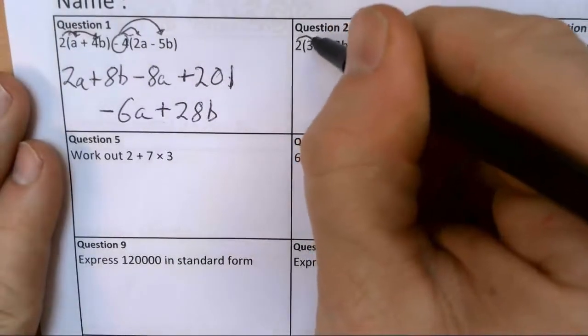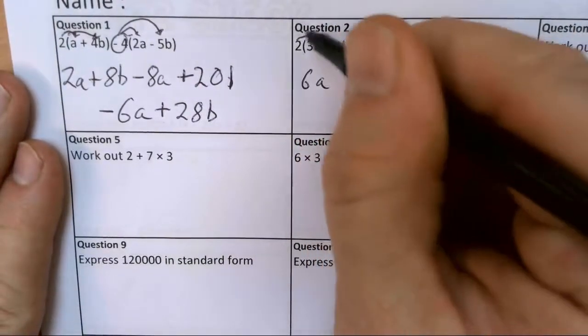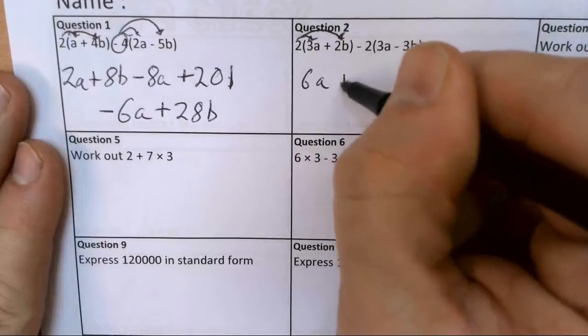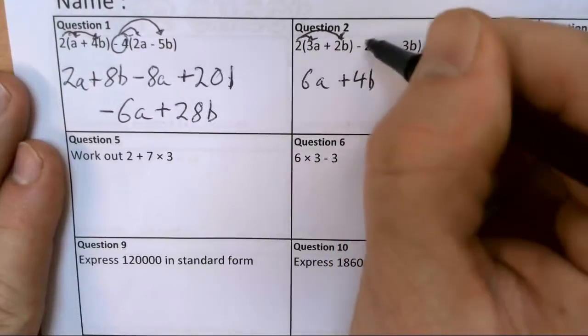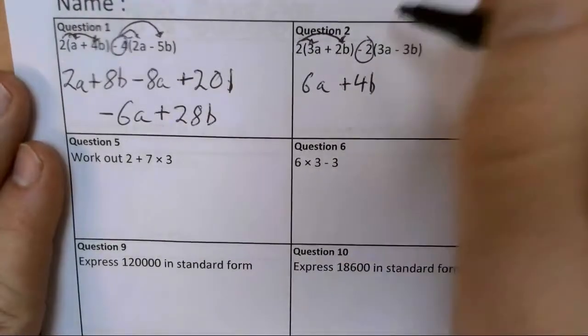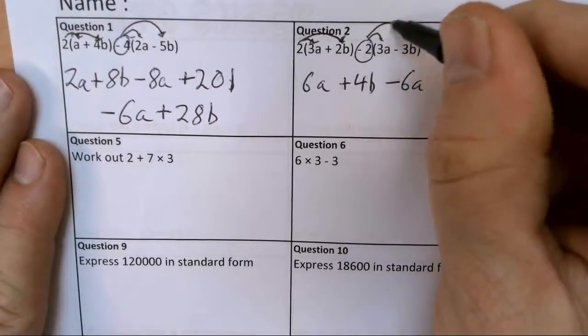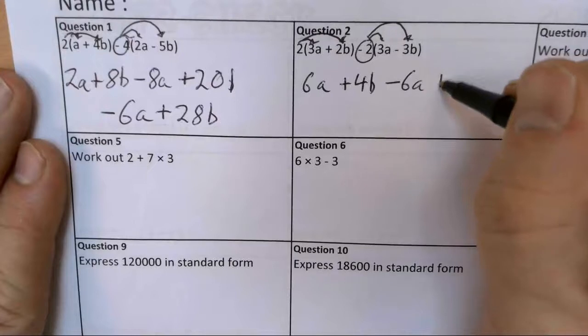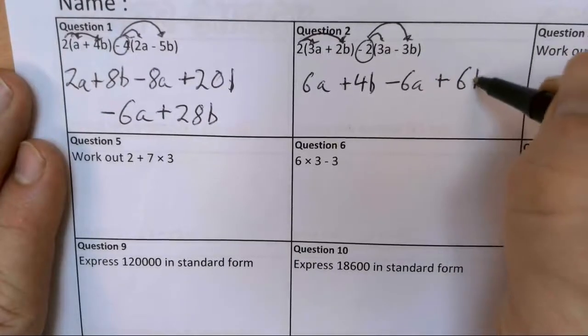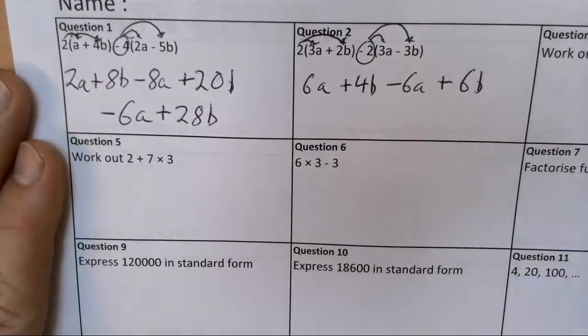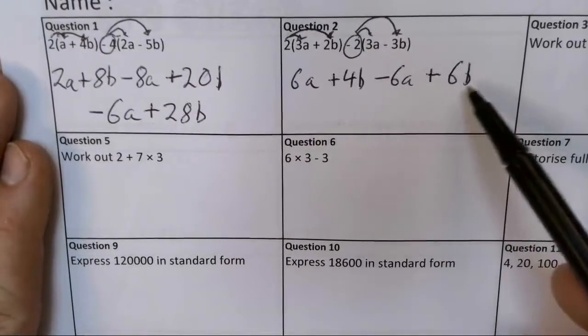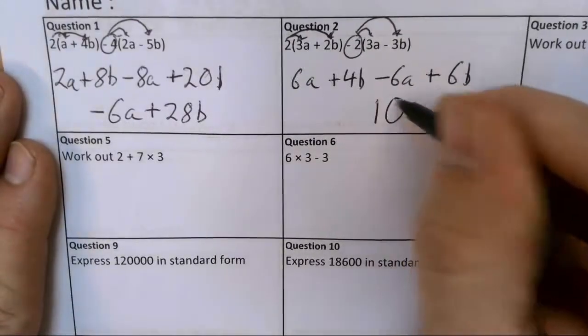2 times by 3a gives me 6a. 2 times by 2b gives me plus 4b. Careful again with the negatives. Minus 2 times by 3a gives me minus 6a. Minus 2 times minus 3b gives me plus 6b. 6a minus 6a, those cancel out. 4b plus 6b just gives me 10b.